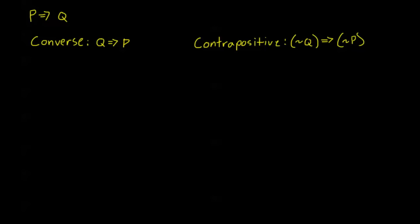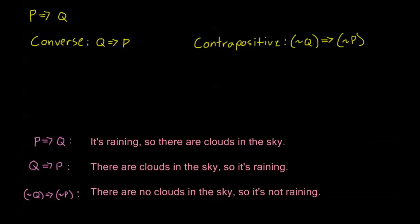To illustrate this, I've written up a little example. If I have some conditional statement P implies Q, the statement I've chosen is: it's raining, so there are clouds in the sky. It's raining is my P, and there are clouds in the sky is my Q. And this is a true conditional statement.